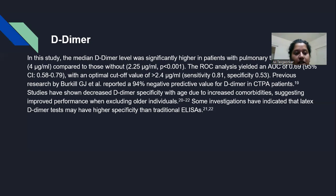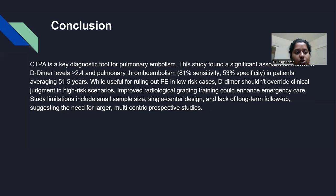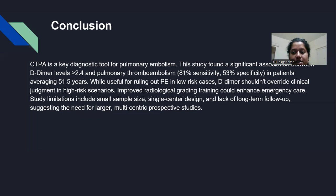Previous research reported a 94% negative predictive value of D-dimer in CTPA patients. Studies have shown decreased D-dimer specificity with age due to increased comorbidities, suggesting improved performance when excluding older individuals. CTPA is a key diagnostic tool for pulmonary embolism, with a significant association found between D-dimer levels and pulmonary thromboembolism in patients averaging 51.5 years. While useful for ruling out PE in low-risk cases, D-dimer should not override clinical judgment in high-risk scenarios, and improved radiological grading training should enhance emergency care.